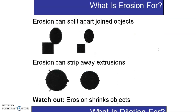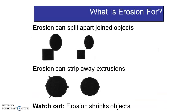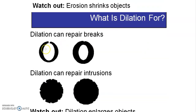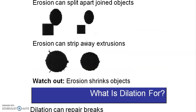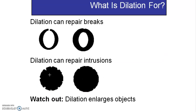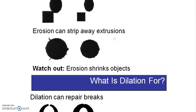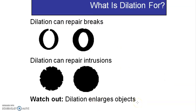Specifically, erosion is used when you need to split apart joined objects — thinning creates a space between them — and it strips away any extrusions, shrinking the object. Dilation does the opposite: if there is a break, it repairs that break; if there is an intrusion, it repairs it; and it enlarges the object overall.